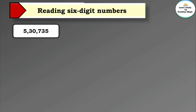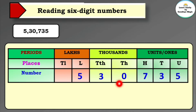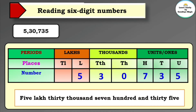Next number is 5,30,735. Let's write this number according to its places: five is in the lakhs place, three is in the ten thousands place, zero is in the thousands place, seven is in the hundreds place, three is in the tens place, and five is in the units place. Now read this number: five lakh thirty thousand seven hundred and thirty-five.